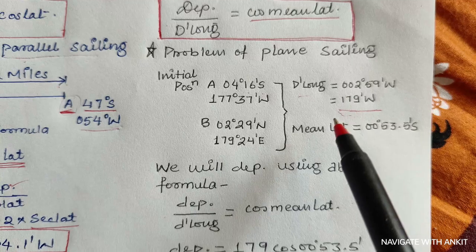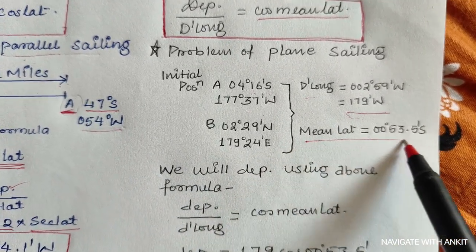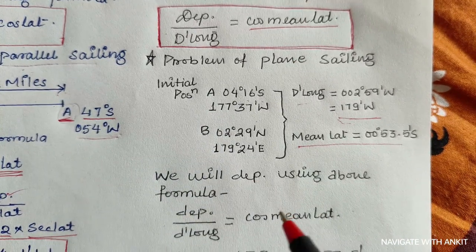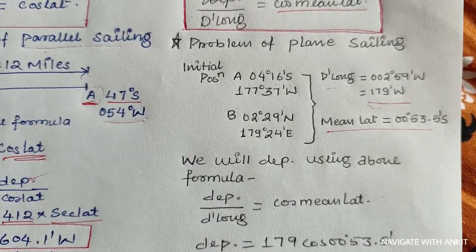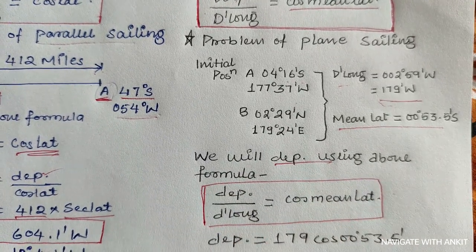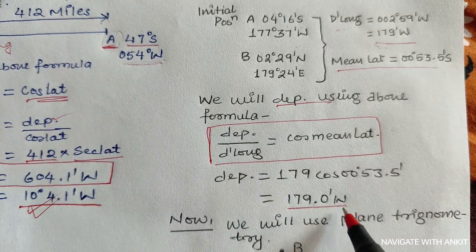So we have calculated the D'long, converted into minutes, and then we will find the mean latitude because in plane sailing we need mean latitude as we discussed earlier. We will find the departure using the formula departure upon D'long equals cosine of mean latitude, and we will get the departure as 179.0 minutes.